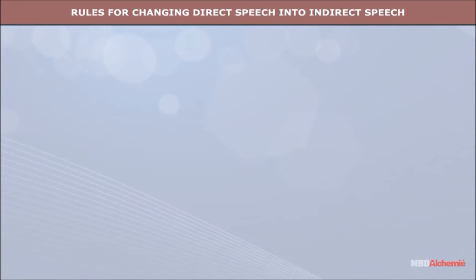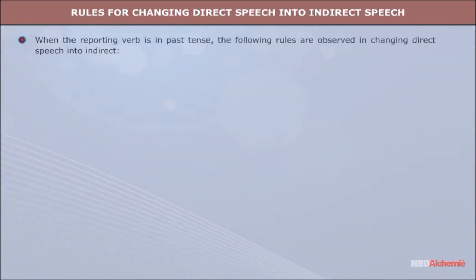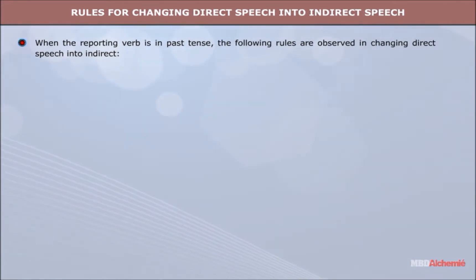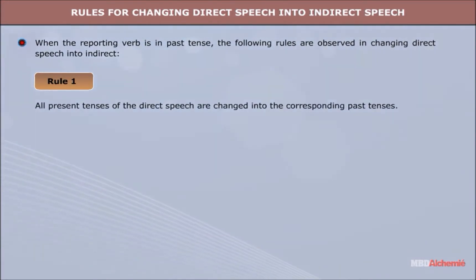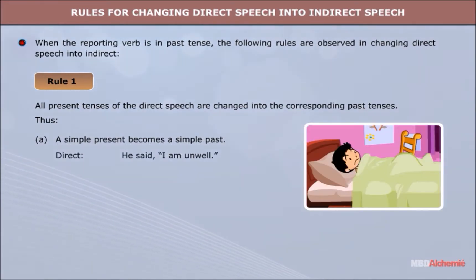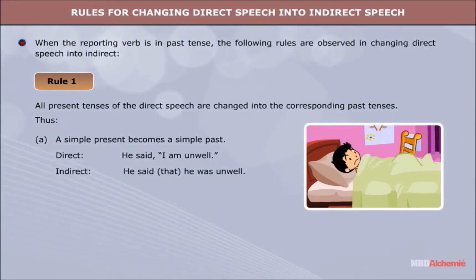Rules for changing direct speech into indirect speech. When the reporting verb is in past tense, the following rules are observed. Rule 1: All present tenses of the direct speech are changed into the corresponding past tenses. A. A simple present becomes a simple past. Direct: He said, 'I am unwell.' Indirect: He said that he was unwell.